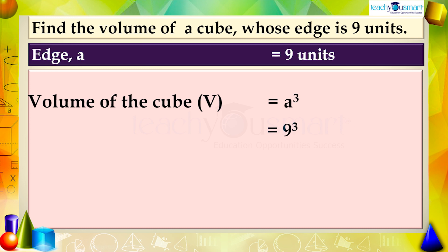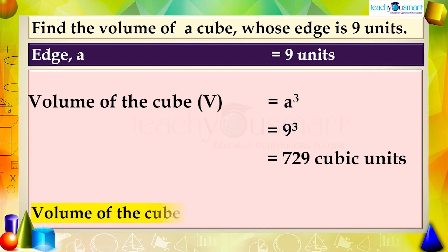Which is equal to 9³, equals 729 cubic units. Therefore, the volume of the cube is 729 cubic units.